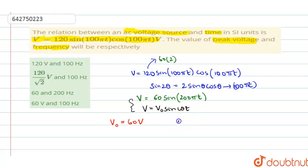And omega value, see in place of omega, what you have? In place of omega, you have 200π. So omega is 200π, but you have to calculate frequency out of it.